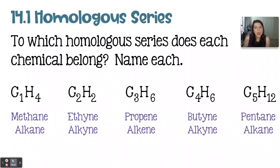Up next, we have C3H6. Because I have doubled the number of carbons to get the number of hydrogens, that means I'm working with an alkene. And this alkene has three carbons, meaning it is propene.